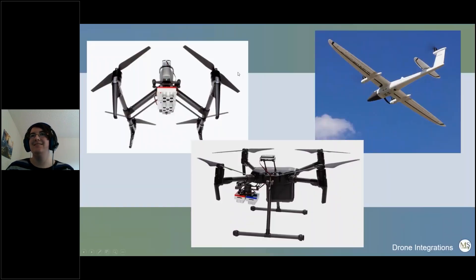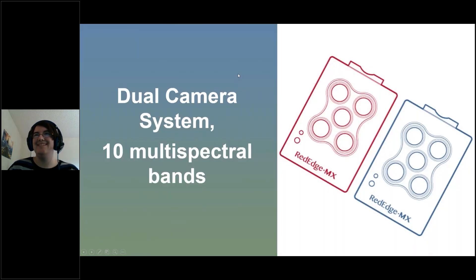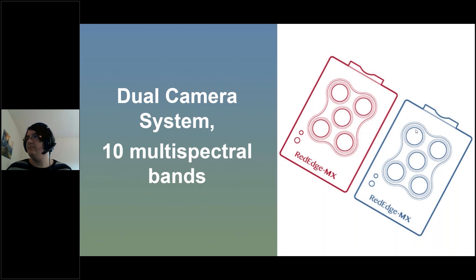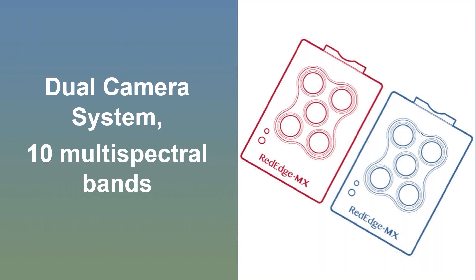The dual camera system is essentially a combination of 10 multispectral bands across the spectrum. It takes the existing RedEdge MX sensor and combines it with a new RedEdge MX Blue sensor. This allows capture of 10 narrow wave bands across the spectrum, which have been chosen to directly mirror the wavelengths of Landsat and Sentinel data. This allows direct satellite comparisons between drone data and satellite data sources. It's ideal for advanced research and analytics within fields such as agriculture, vegetation analysis, conservation, and land and water management.